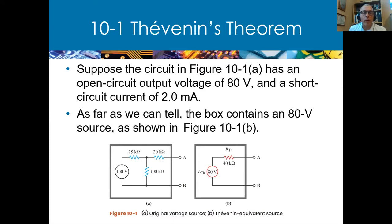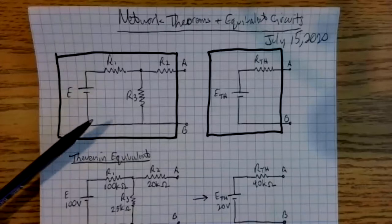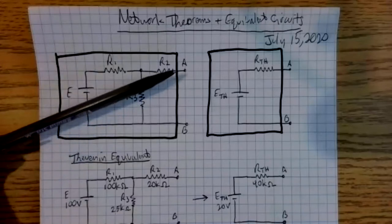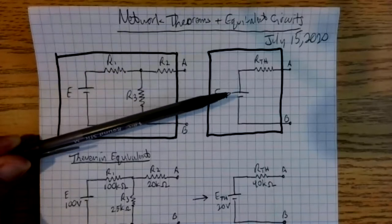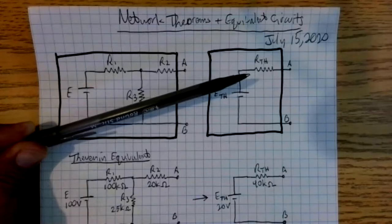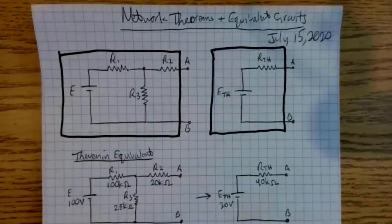Just to review what we did this morning: we had an original circuit with two terminal outputs. What we did is we reduced it down to an equivalent voltage and equivalent resistance. The outputs would act the exact same way as the original circuit. We went through a couple of examples of that, and that is available in the notes from this morning.